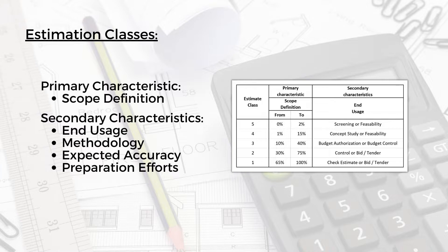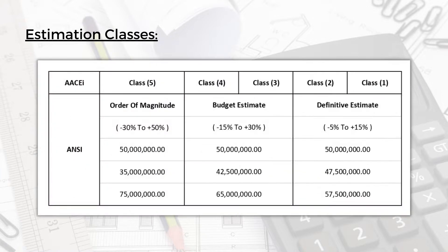The secondary characteristics include the end usage — why do we need this estimate and what are we going to do with it — as well as the methodology, the expected accuracy, and the efforts for preparation. The estimation classes as per the AACEI, which stands for the Association for the Advancement of Cost Engineering International, include five classes: class 5, 4, 3, 2, and 1.